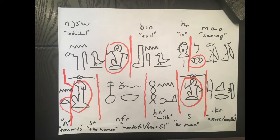The next word is 'se.' We have the door bolt with the determinative of a man — so again, a man, the man, or just man, no definite articles in Egyptian. Then we have our final word, 'iker,' which is astute or excellent. So the entire sentence reads: individual evil is seeing towards woman wonderful with man astute. Or in English: the evil individual is seeing towards the beautiful woman with the astute man — or excellent man.